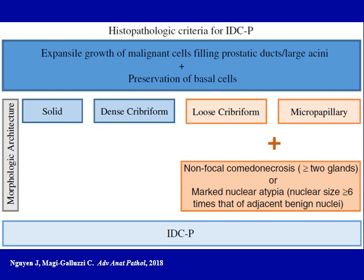If a lesion shows only loose cribriform or micropapillary architecture, then you do need non-focal comedonecrosis or marked nuclear atypia in which nuclei are six times larger than adjacent nuclei to make the diagnosis of intraductal carcinoma. In my experience, majority of atypical loose cribriform proliferations would fall within the category of atypical intraductal proliferation. Micropapillary architecture typically is associated with high-grade PIN, so this type of presentation for intraductal carcinoma is pretty uncommon.